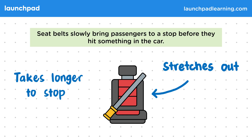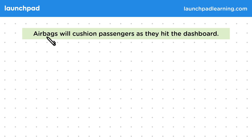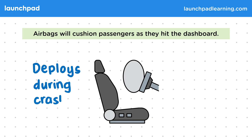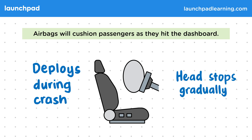But what happens if the seatbelt doesn't slow the passenger enough to stop them from hitting the dashboard? Airbags will cushion passengers as they hit the dashboard. An airbag is a cushion that inflates out of the dashboard. A system in the car will automatically deploy them as it detects the force from a crash. The airbag cushions a passenger's head by bringing it to a stop gradually, which increases the time it takes to stop and decreases the force required to do so.